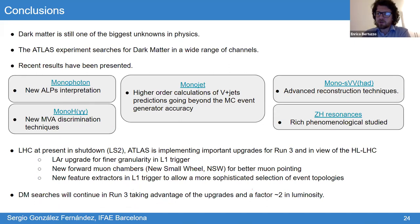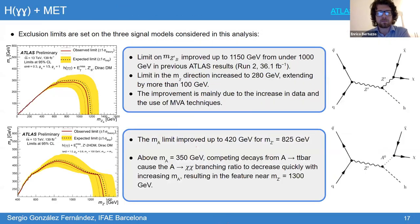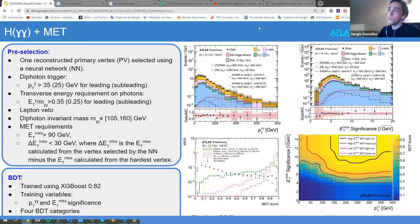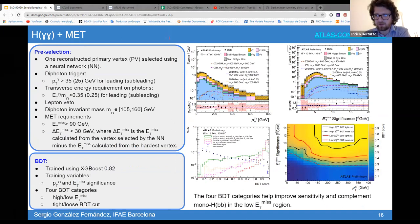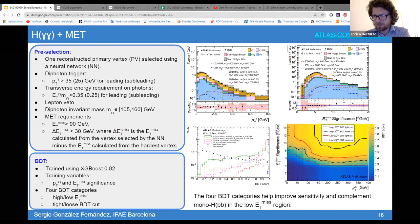Sergio is thanked for the talk. A question from Valentina Cesare: which neural network algorithm is used to select the primary vertex? Sergio notes he cannot answer without consulting the paper since he doesn't personally work on that analysis, and will post the note link in the chat. Since no further questions are seen, attendees are invited to contact Sergio directly.